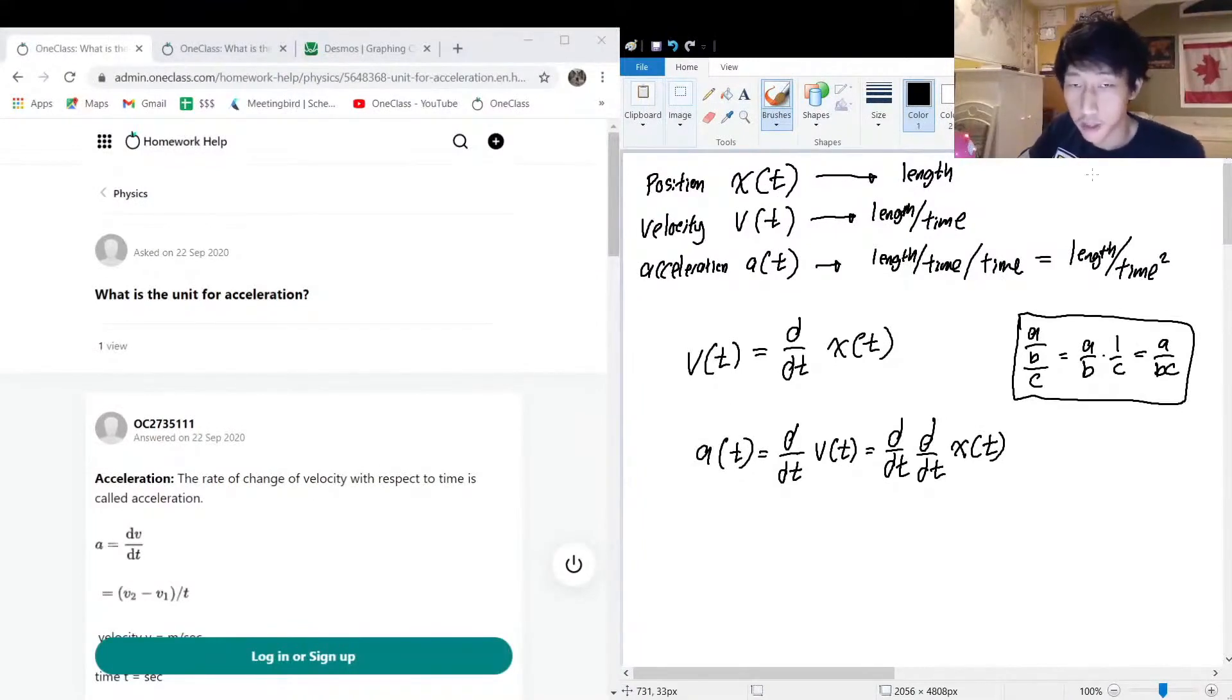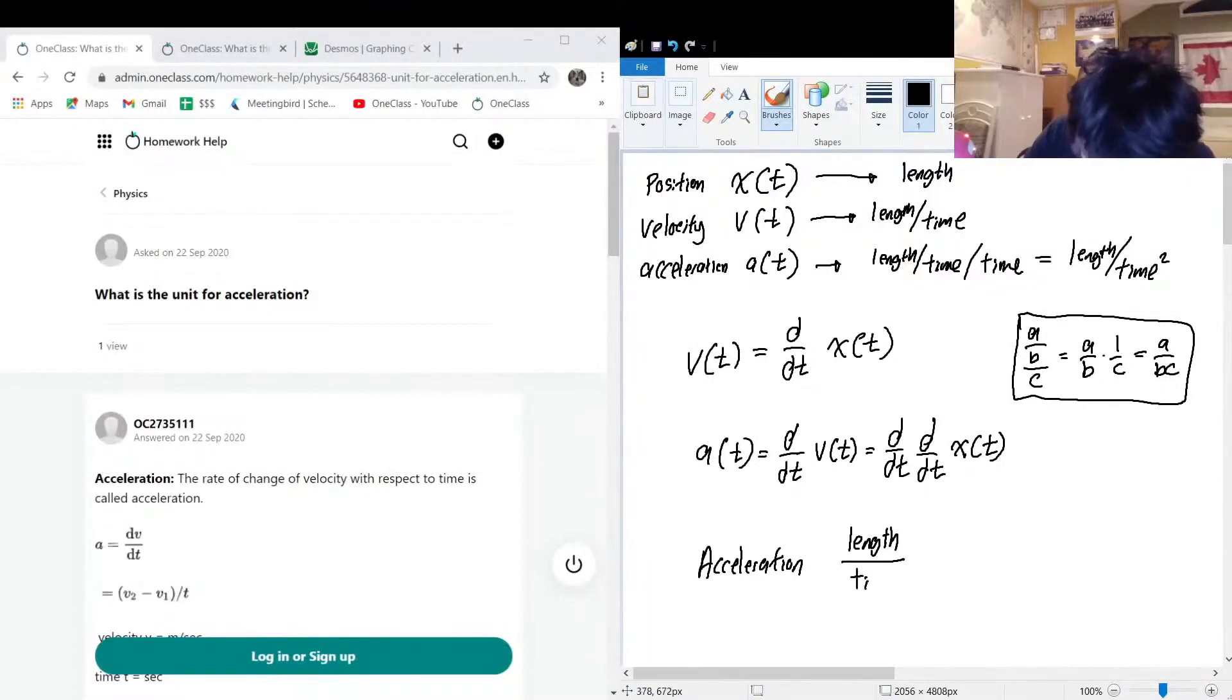So cool, we know that the units for acceleration have to have the properties length over time squared.